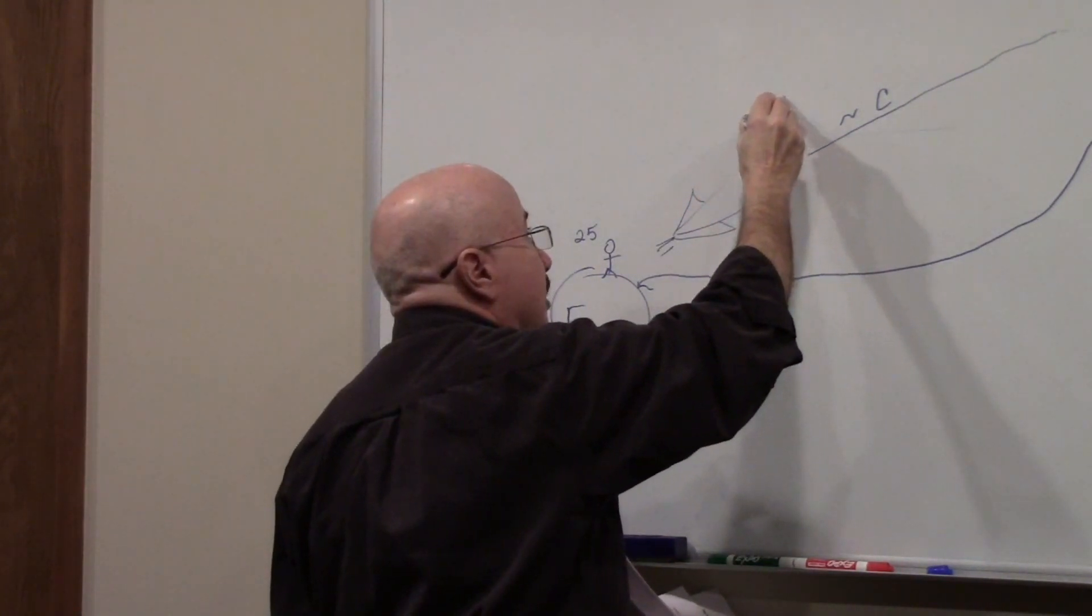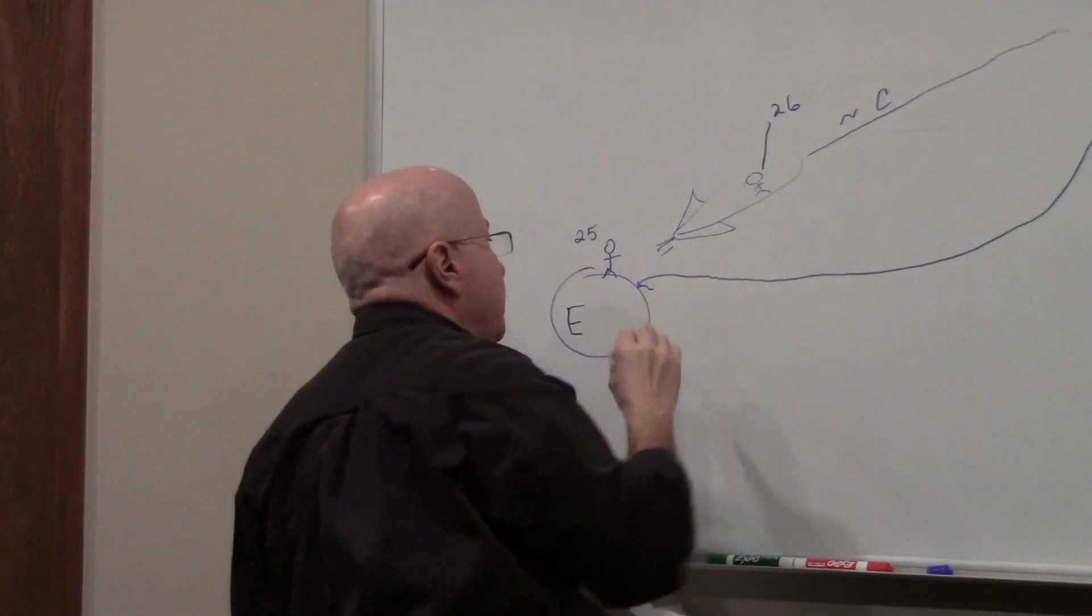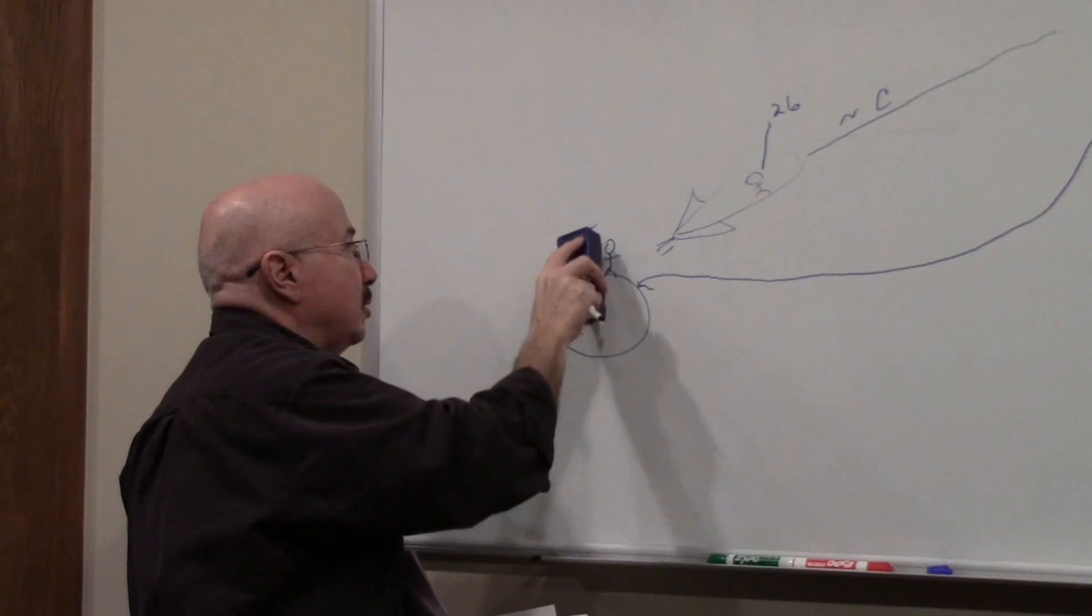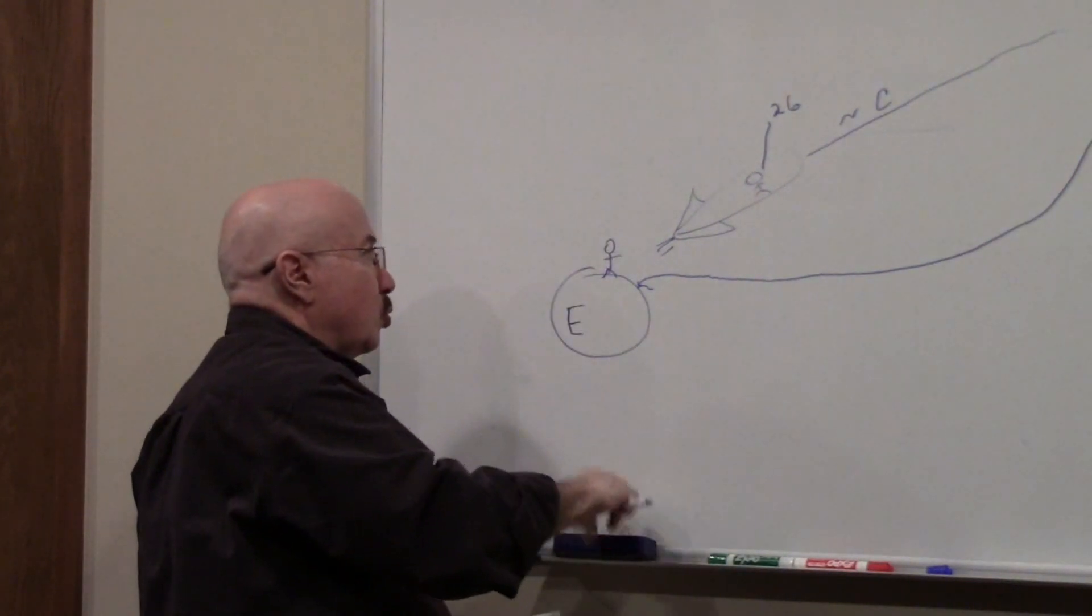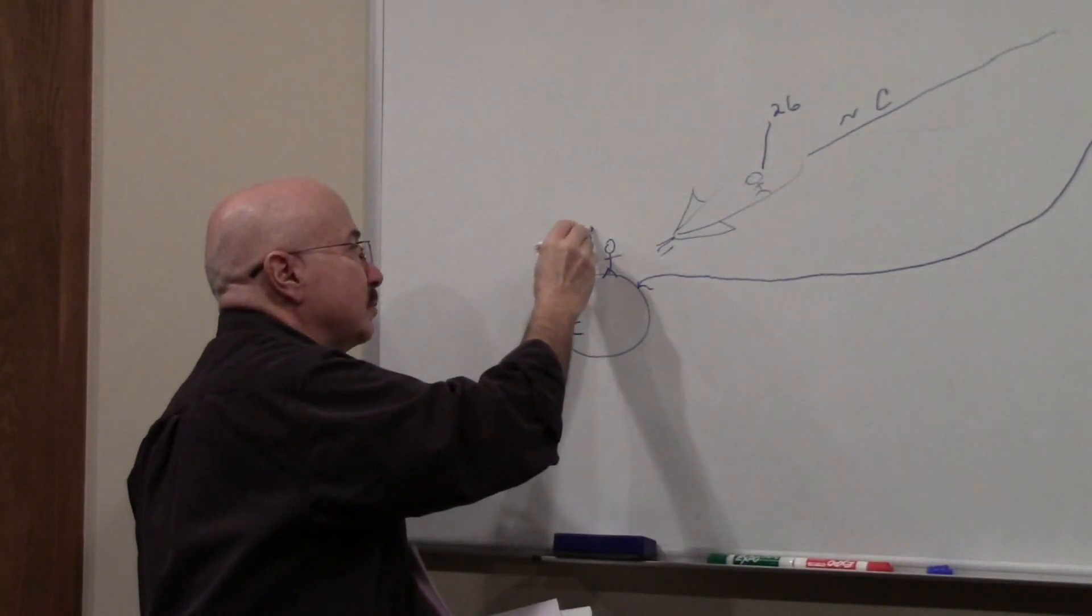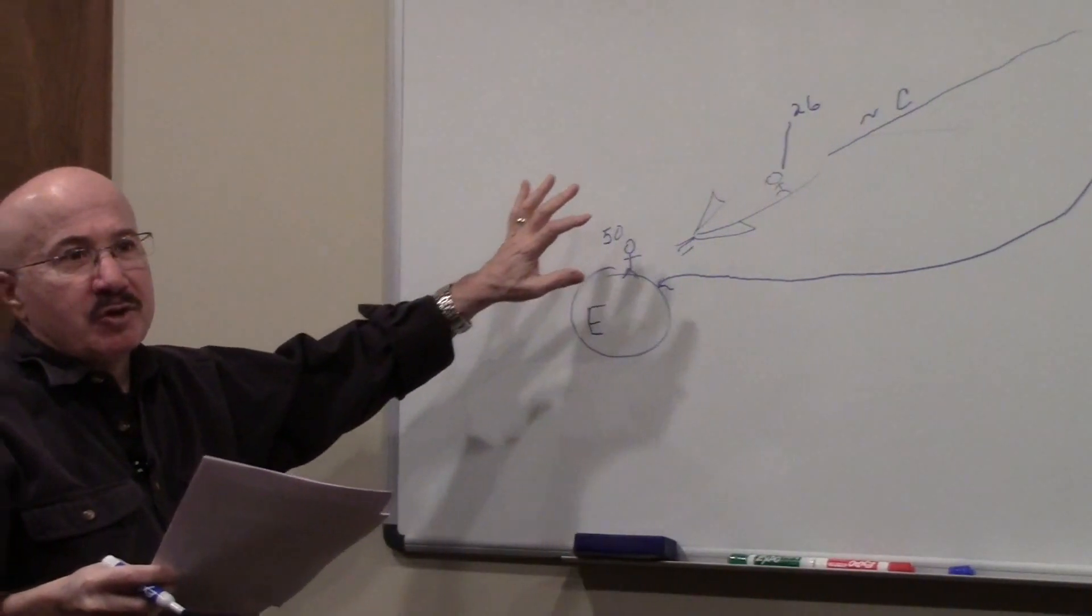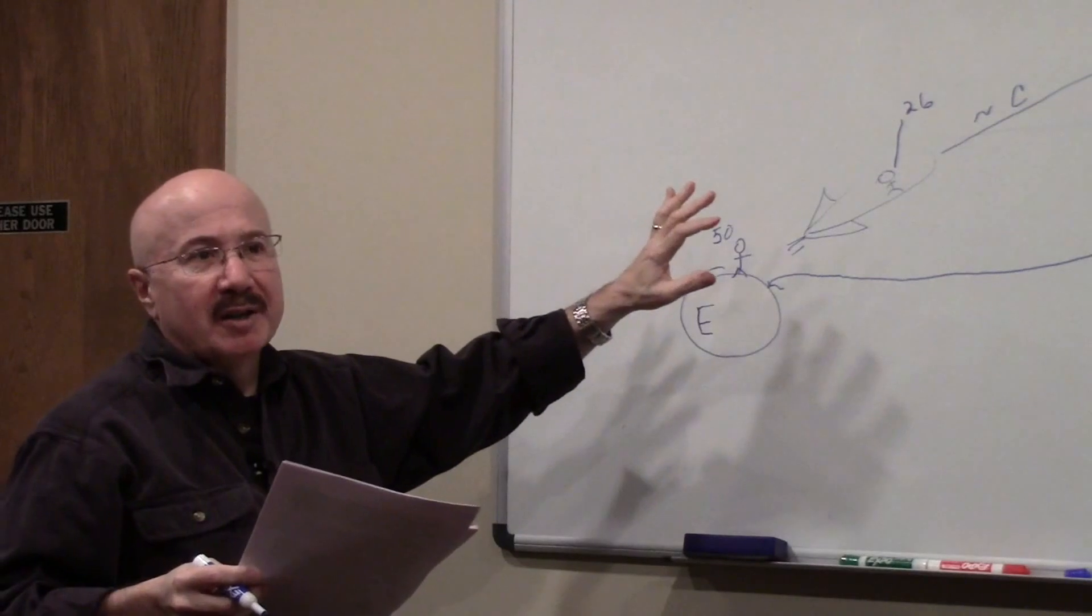So now you're 26. Well when you meet your twin, when you meet your twin, your twin is 50. Now I'm just using the numbers to illustrate this. This is called the twin paradox.